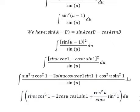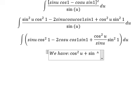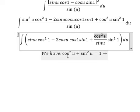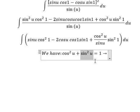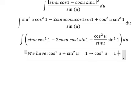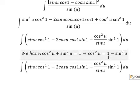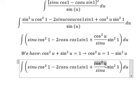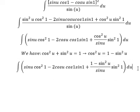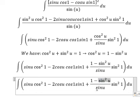Next we have the second formula. We have cosine²(u), and I will move this to the right. So cosine²(u) equals 1 minus sine²(u). I will substitute that in here, giving us 1 divided by sine(u) and sine²(u) divided by sine(u).